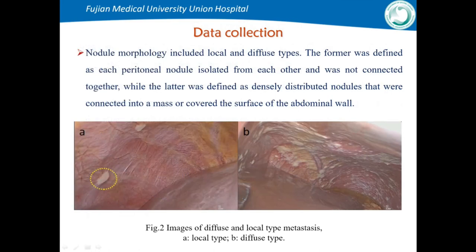Nodule morphology included located and diffuse types. The located type was defined as peritoneal nodules isolated from each other, not connected together. The diffuse type was defined as densely distributed nodules connected into a mass or corroding the surface of the abdominal wall.